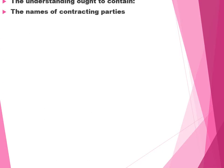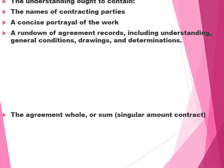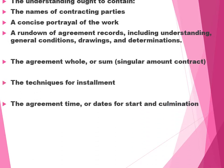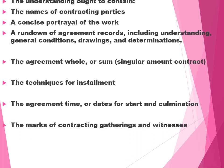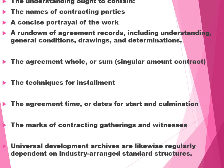The agreement ought to contain: names of contracting parties, a concise description of the work, a list of agreement records including agreement, general conditions, drawings and specifications, the agreement sum or lump sum contracting case, the techniques for installments, agreement time, date of start and date of completion, marks of the contract parties and witnesses. Universal development archives regularly depend upon industry-oriented standard structures.